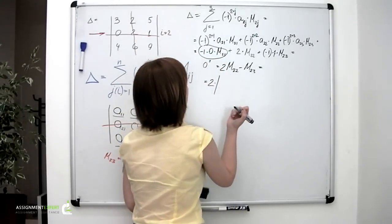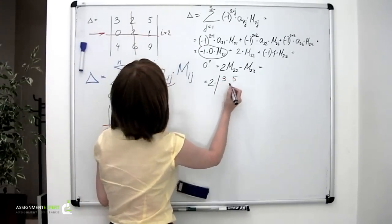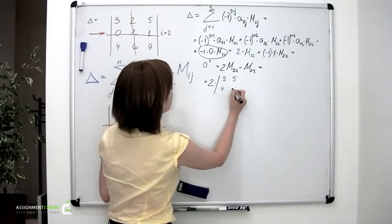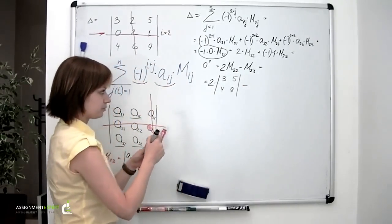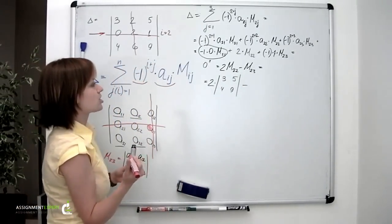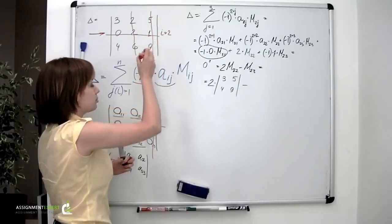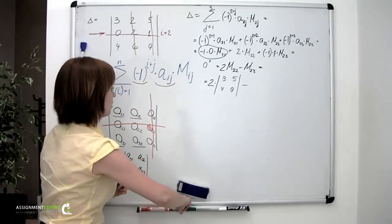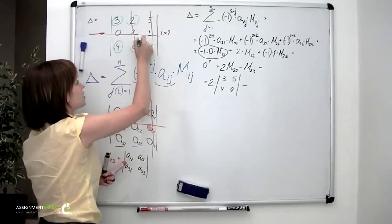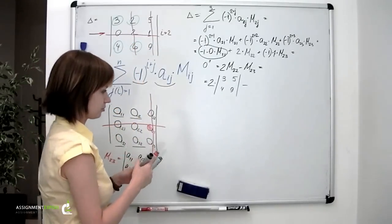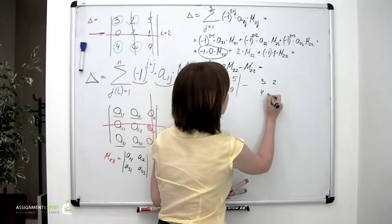So it goes like this: 2 times 3, 5, 4, 9. And then minus minor M2-3, which is obtained by crossing out the second row as well and then the third column. And the numbers left are 3, 2, 4 and 6.